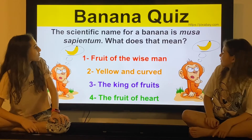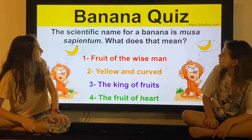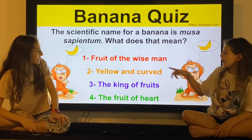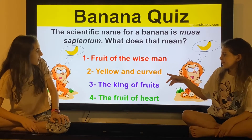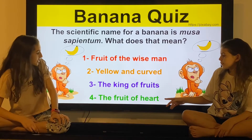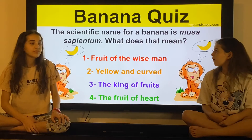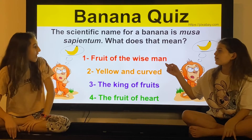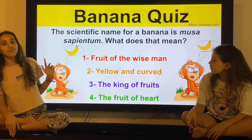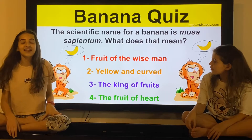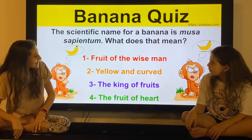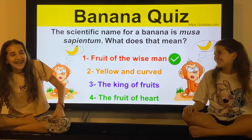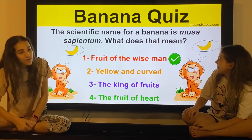The scientific name for a banana is Musa sapientum. What does that mean? Fruit of the wise man. Yellow and curved. The king of fruits. The fruit of the heart. I think... the fruit of a wise man. I'm going to say fruit of a wise man too, because there's a monkey and I just think they look wise. Yay! It took us so long to process that we got it, but we got it right.